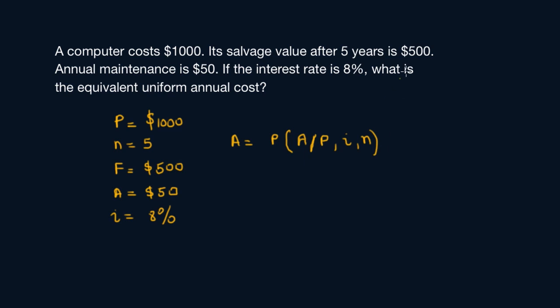We're calculating cost, so we either subtract or add. $500 is the salvage value, a final value, so this will be subtracted from the total cost. Given F, I need to bring it to an annual amount, so I multiply by (A/F,i,n) to cancel it out. Plus your annual maintenance cost—this is already at A, so we just add it.